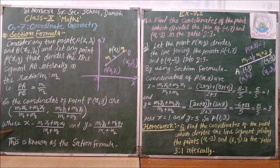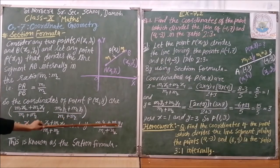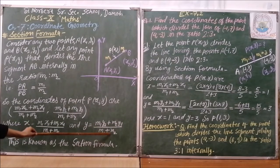Where x equals to M1x2 plus M2x1 upon M1 plus M2 and y equals to M1y2 plus M2y1 upon M1 plus M2 and this is known as section formula.